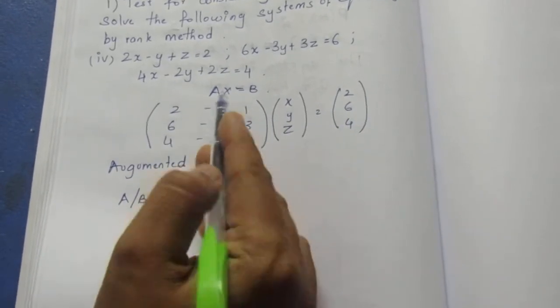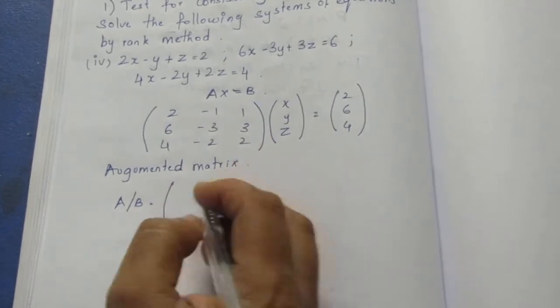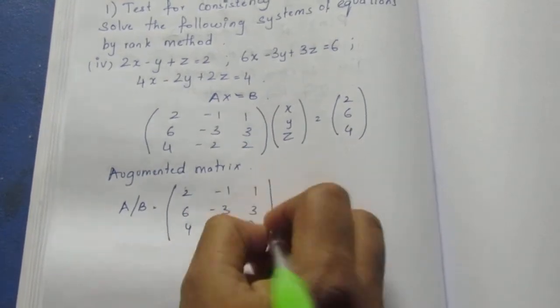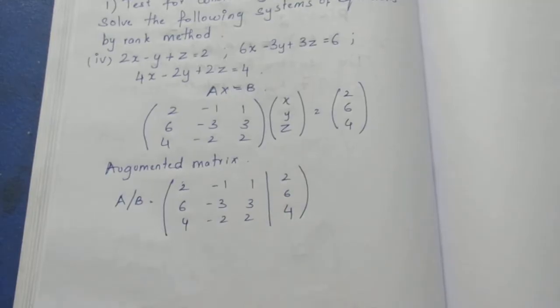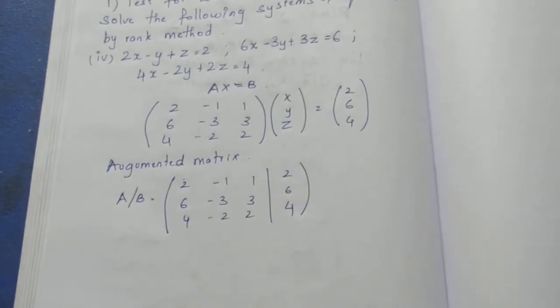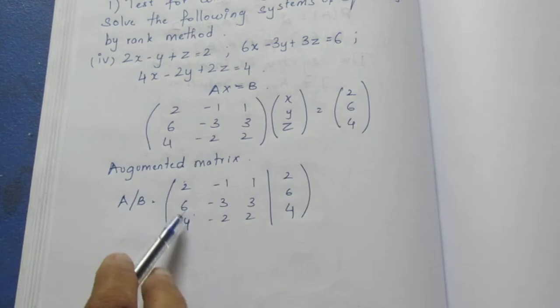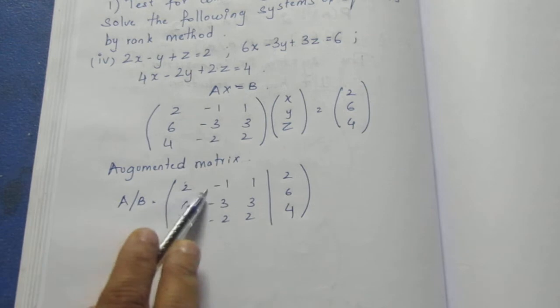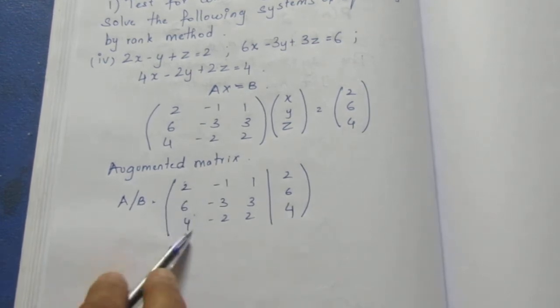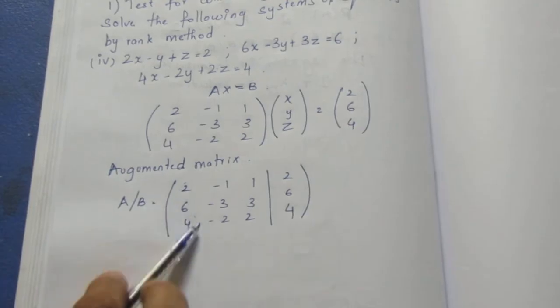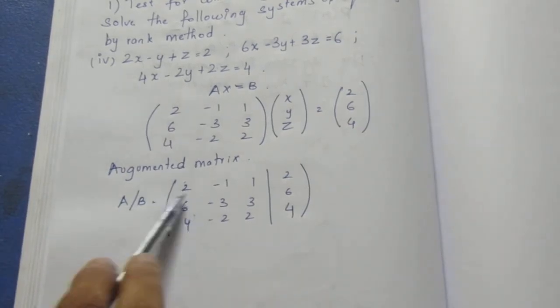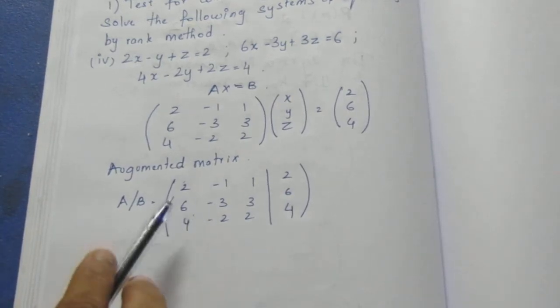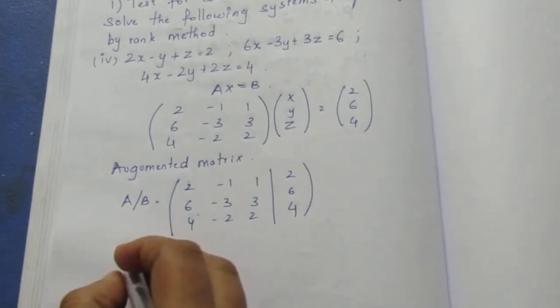To solve the form, we use the rank method to set the denominator. We use a non-zero element and make zeros below it. This is the non-zero element in the first row. We use zero on these two elements below.